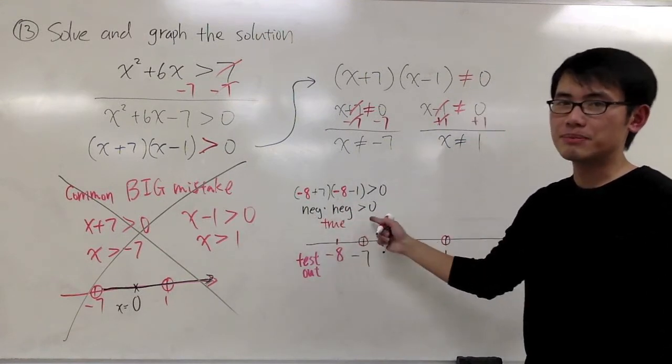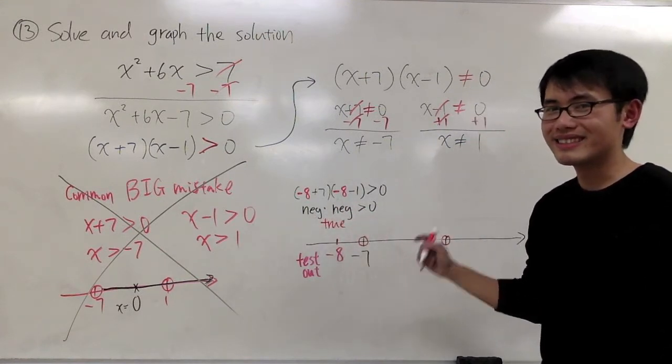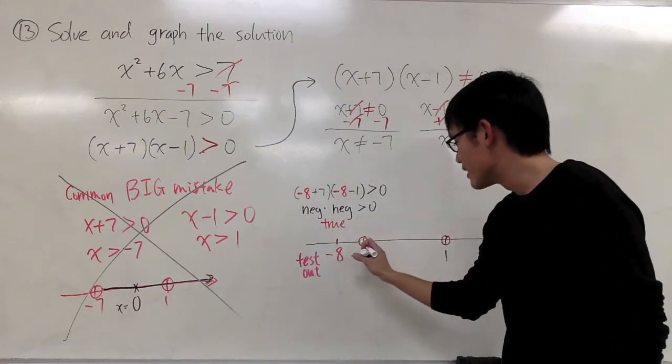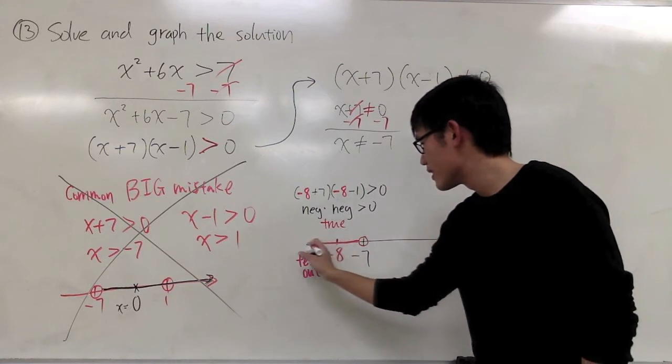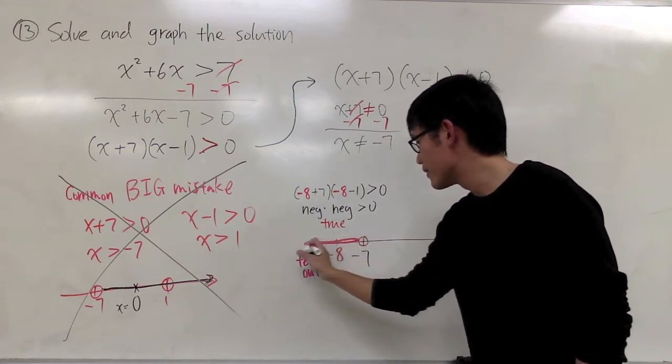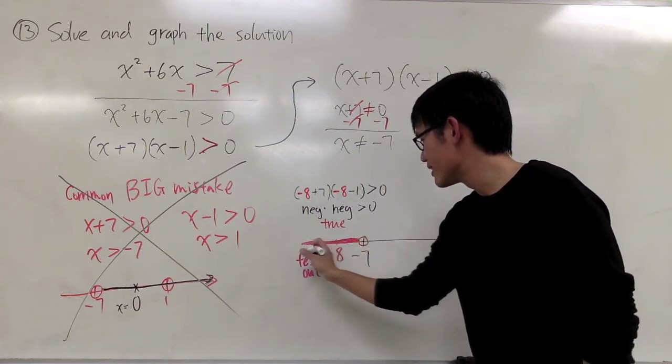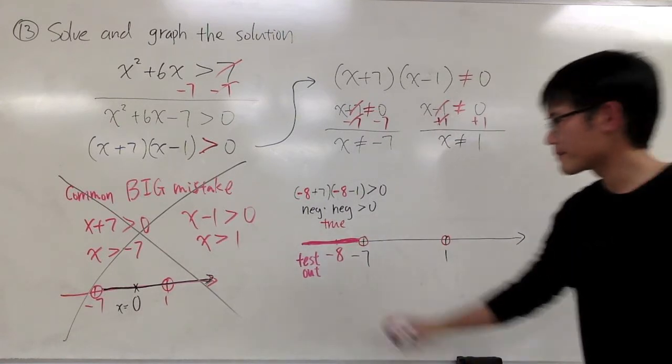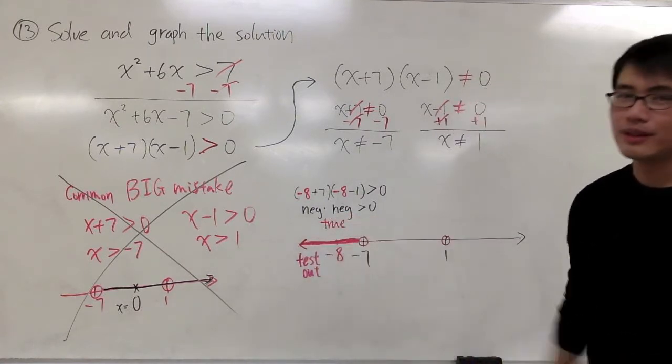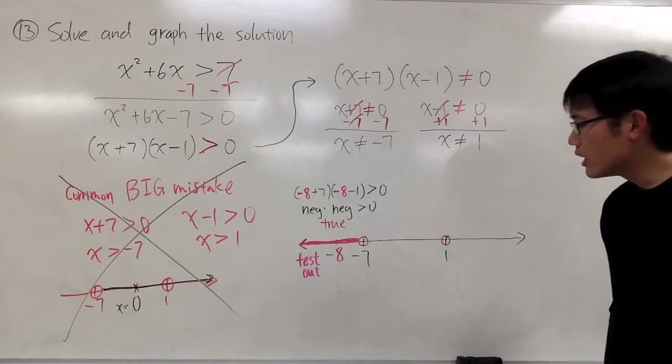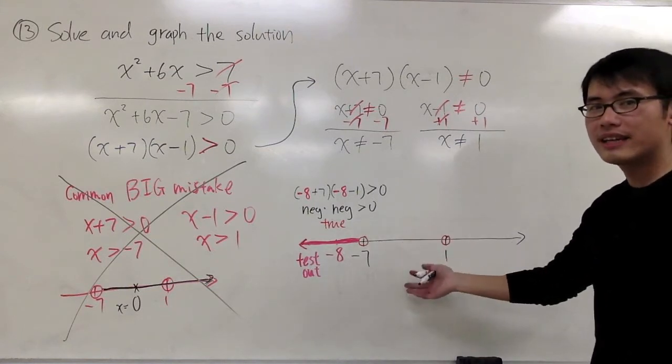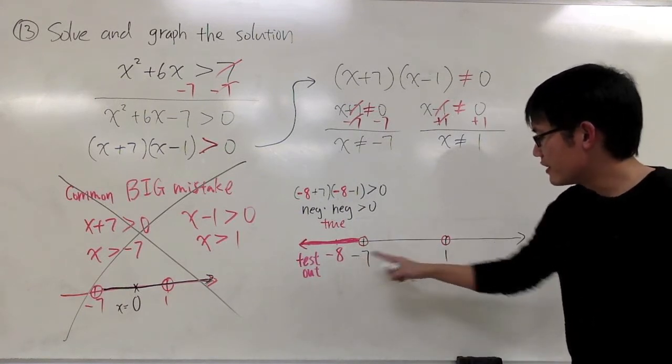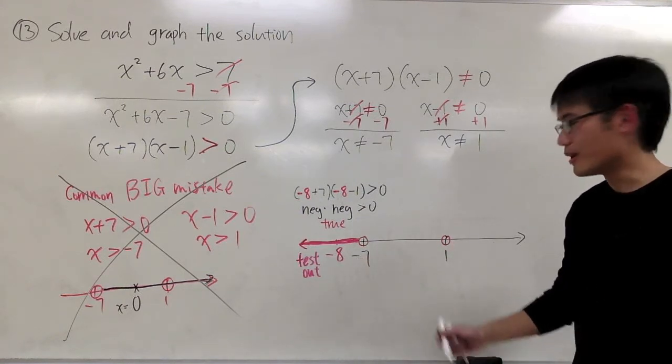If this comes out to be true, you can just color in this interval for your solution. This is one piece for my solution, keeps on going to the left. Just repeat the same thing for the second and third interval. So pick a number between negative 7 and 1. Let's try zero. We'll check if x is equal to zero will work or not.